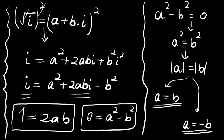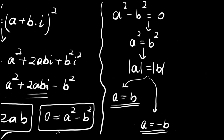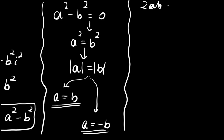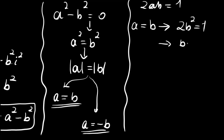This gives us two conditions: either a equals b, or a equals minus b. Let's use these in the first equation, 2ab equals 1. If a equals b, then we have 2b squared equals 1, so b equals plus or minus one over square root of two.